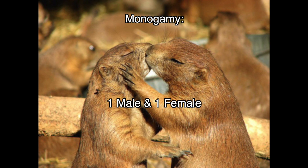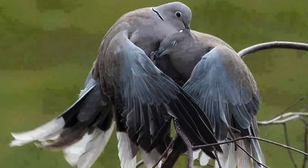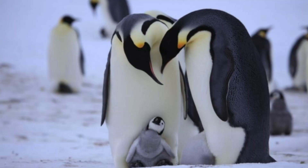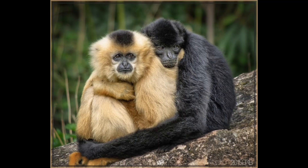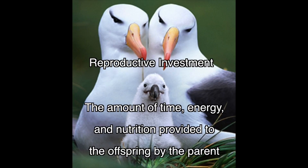A mating system describes how male and female interactions are built around choosing mates. The first one we will talk about is monogamy. Monogamy is the pairing of a single male with a single female. This is the most common in birds but rare in other animals, and it ensures that both mates will contribute to the care of their offspring and to mutual defense. A major cost of true monogamy is that the entire reproductive investment of an individual depends on the fitness of its mate. Reproductive investment is the amount of time, energy, and nutrition provided to the offspring by the parent.